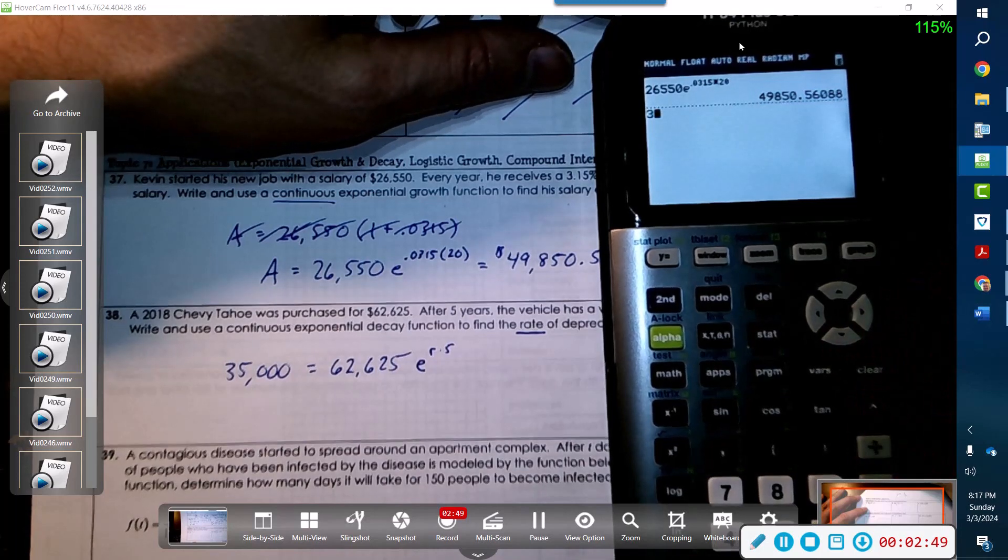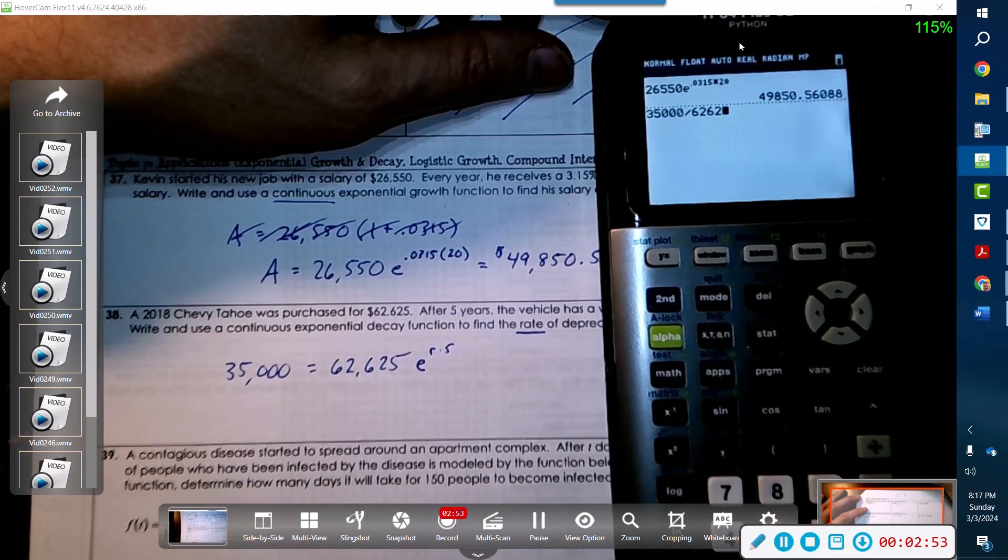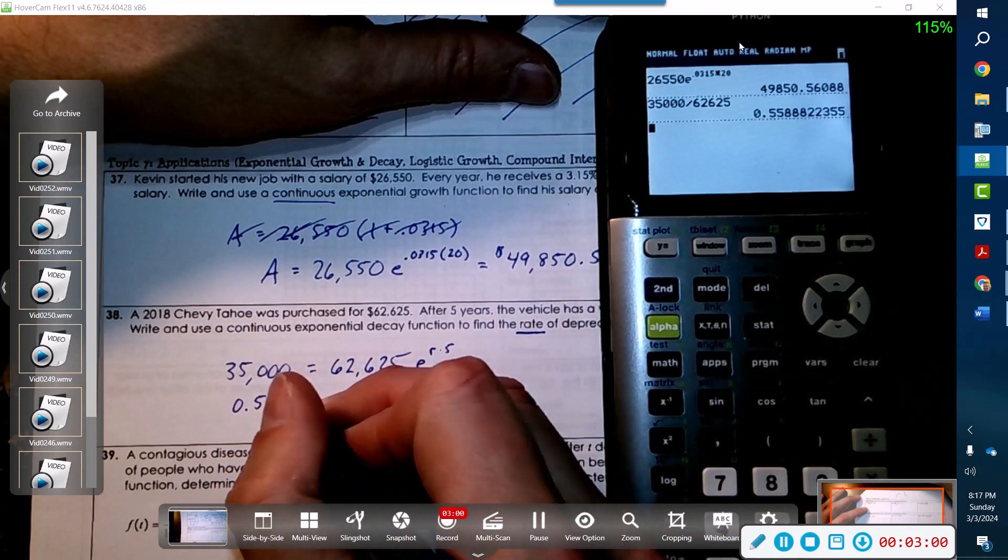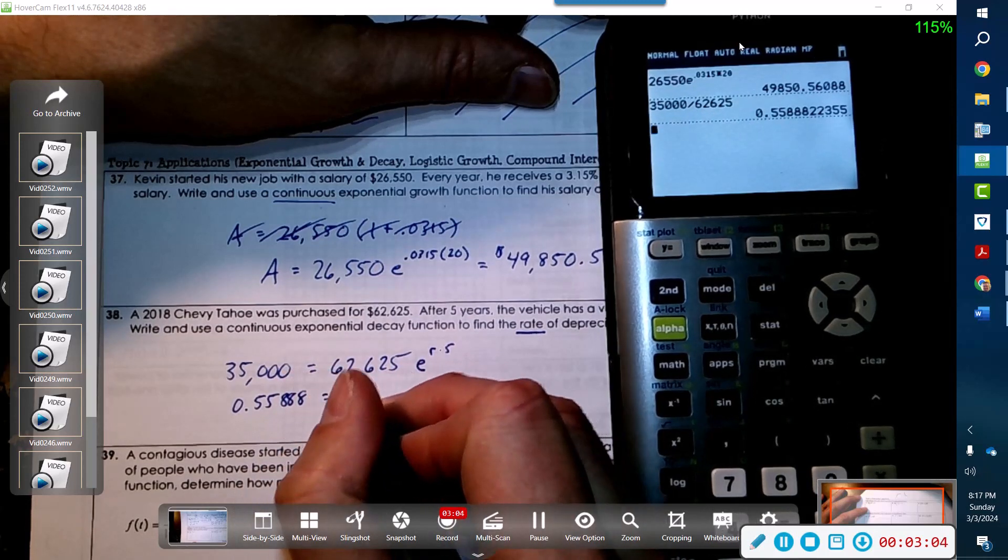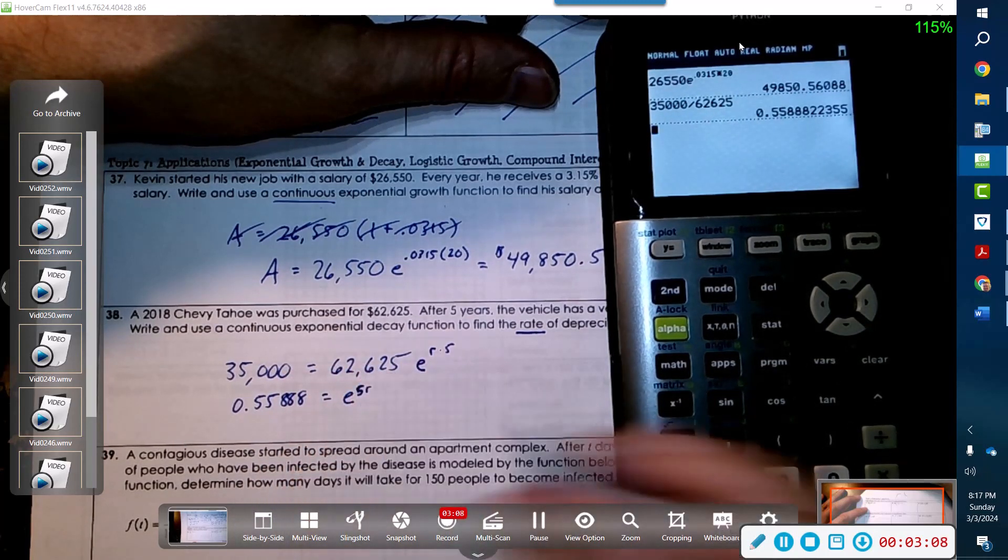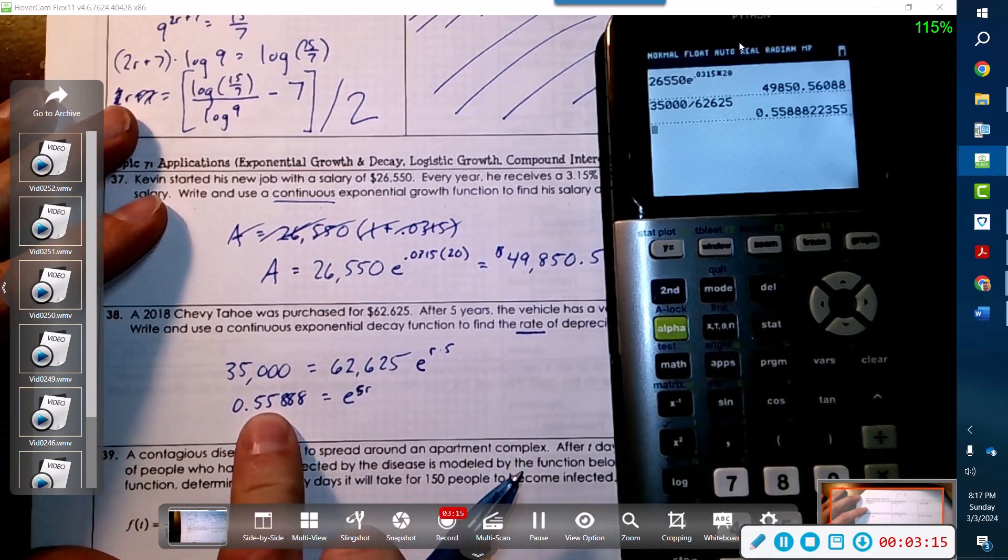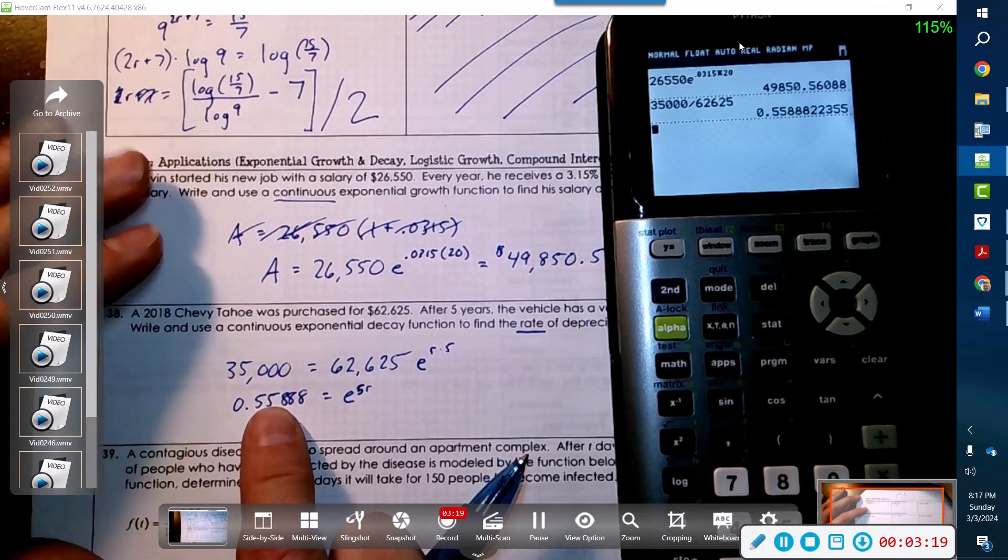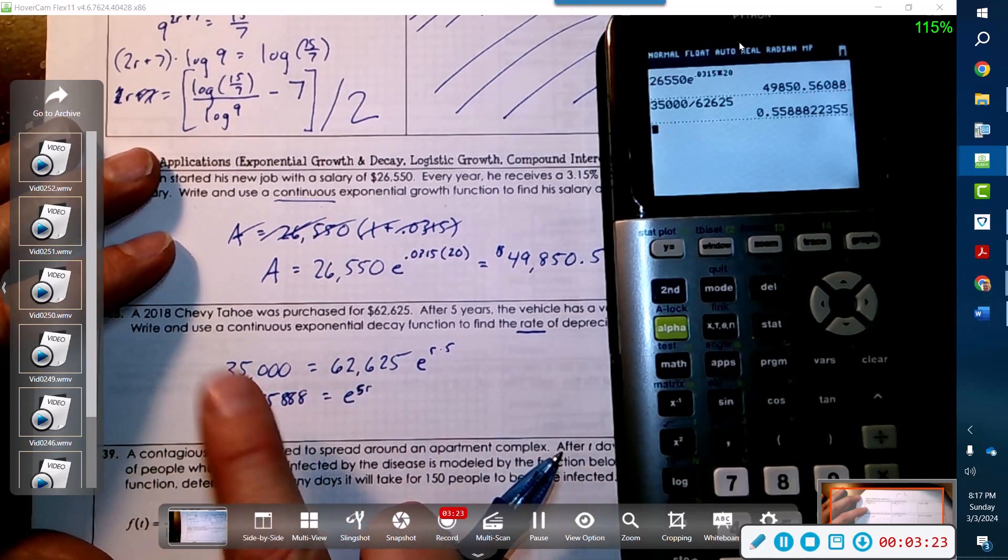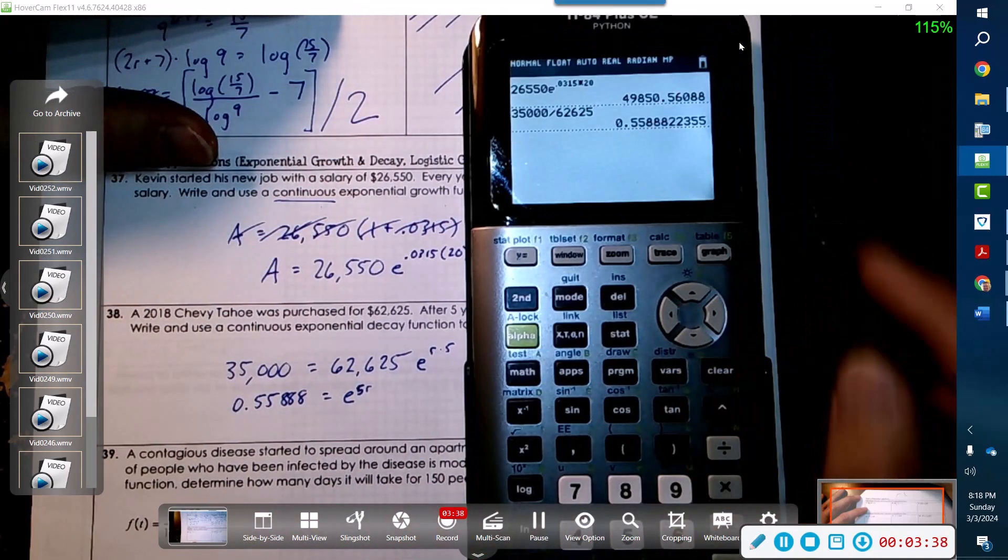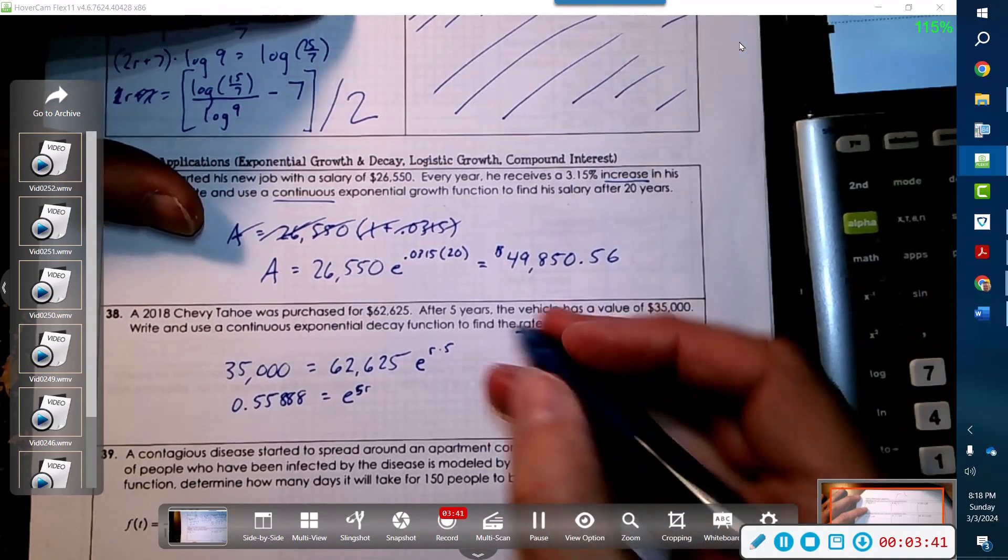So 35,000 divided by 62,625 equals 0.55888, which equals e to the 5r. Now what this is saying is that he depreciated by that much - he lost about 44%.